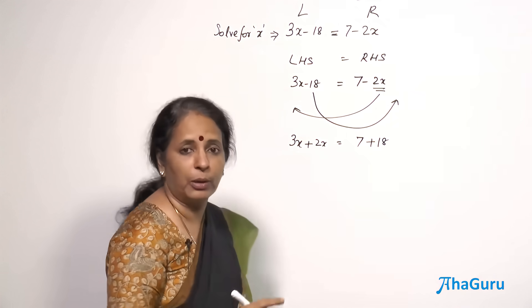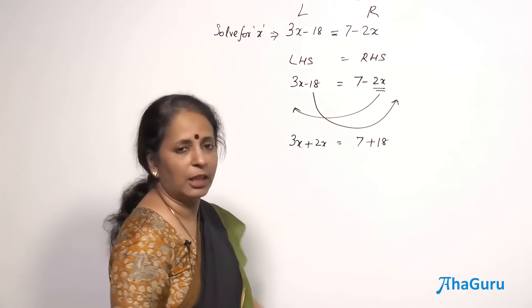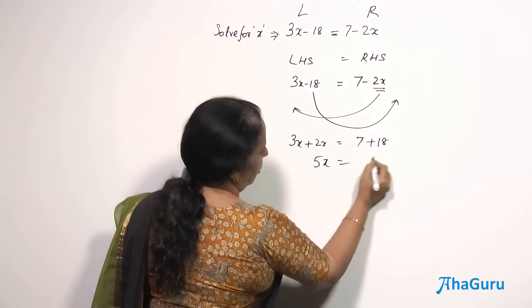3x plus 2x, both of them are like terms because the variables are the same. So they are like terms. Like terms can always be added. 3x plus 2x is 5x is equal to 25.